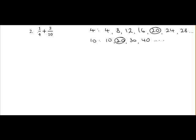So we're going to convert these fractions into what they are over 20. So 1 over 4 is equal to what over 20. So 4 into 20 goes 5 times, 5 ones are 5.